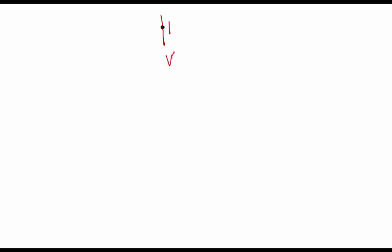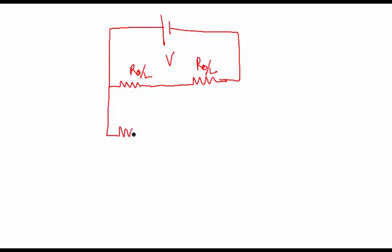This is the battery V and we have R0 by 2 here. We have one more resistor R0 by 2 and this is the resistor about which we need to know the potential difference or the voltage. So this is R and this is given as V.